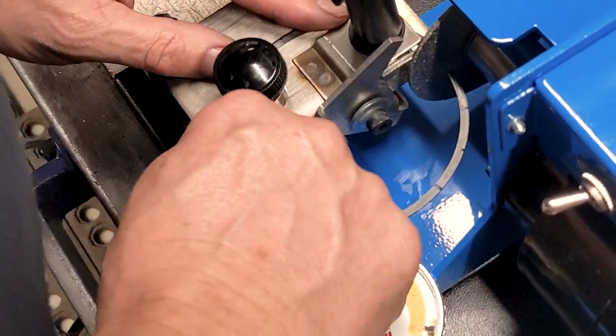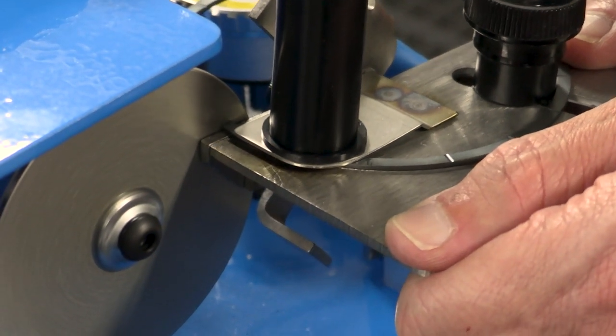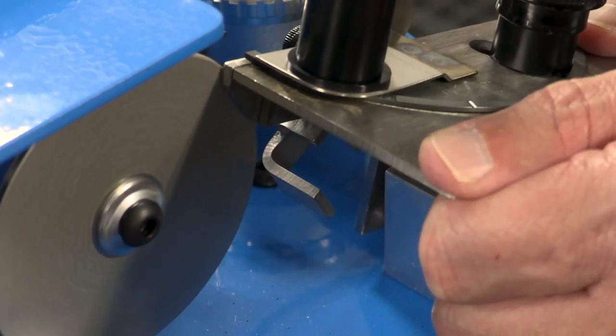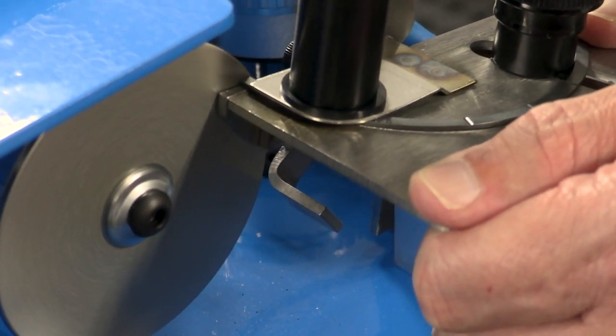What is important is that you can hold the ring completely flat while grinding the end gaps to size. After setting the end gap, it's important to use a jeweler's file to deburr the piston ring.